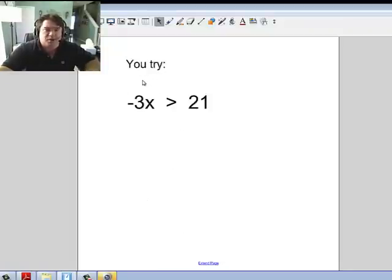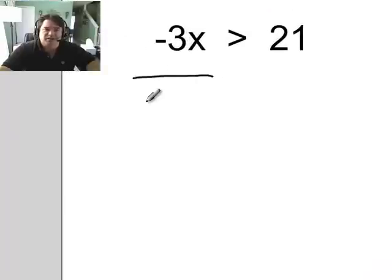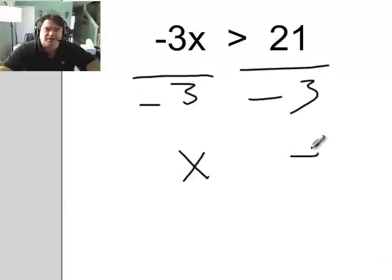Now you try. Go ahead. Pause. Alright. This time, I didn't even have it. You try it written down, so let me go ahead and divide by -3, divide by -3. And I get x over here, negative over here, sign switches from greater than to less than. And there you have it.